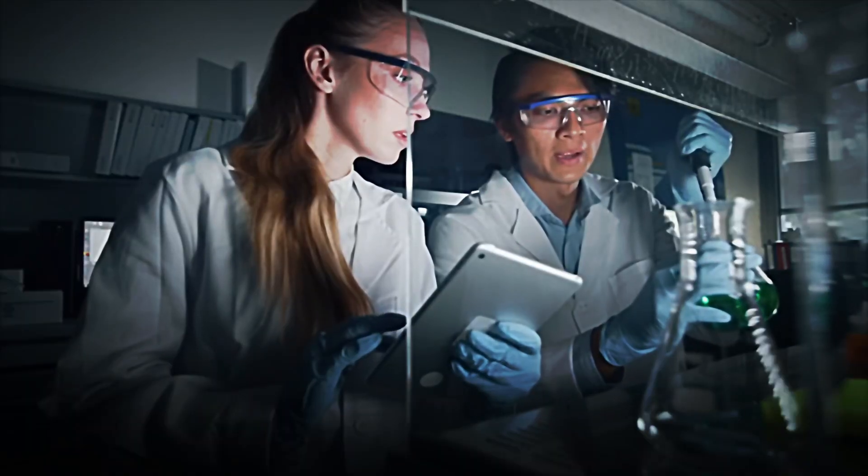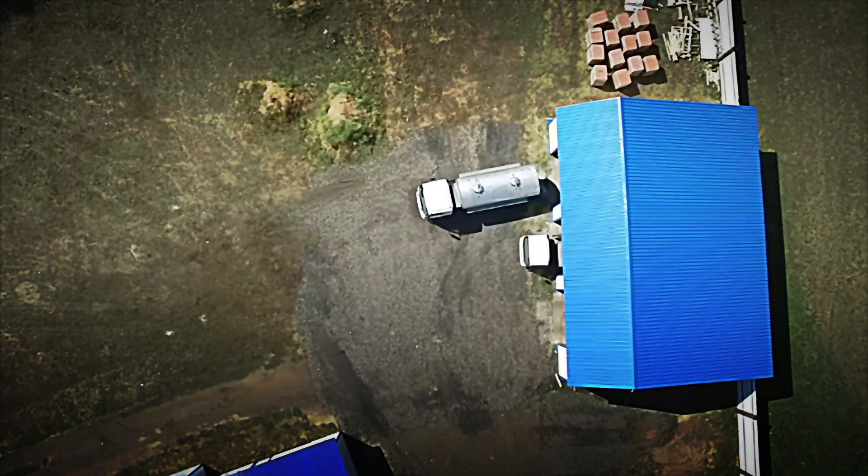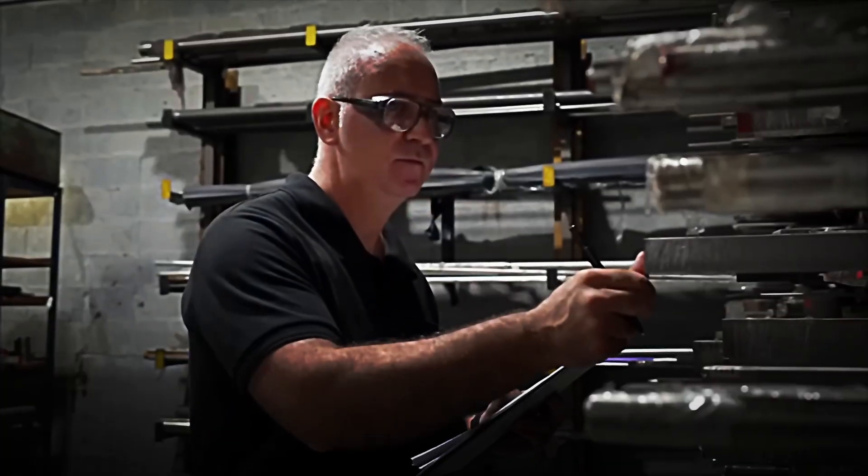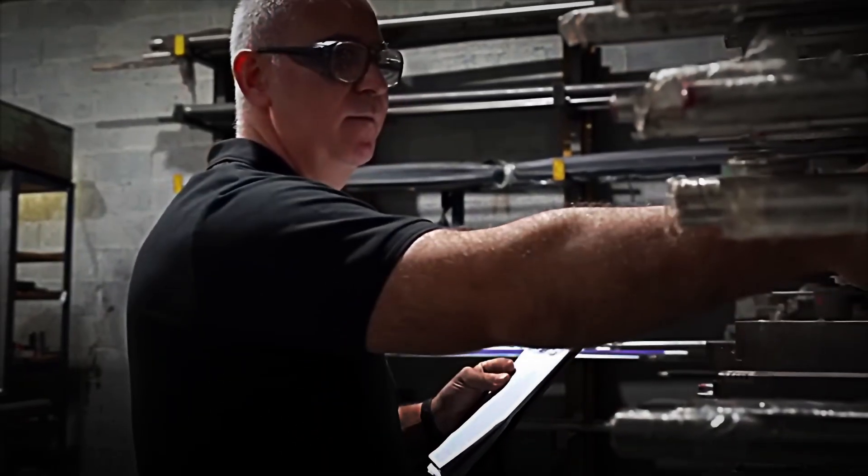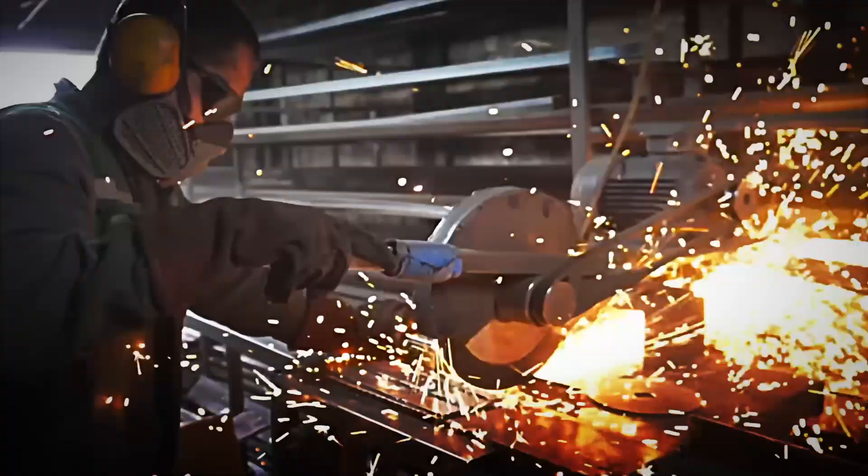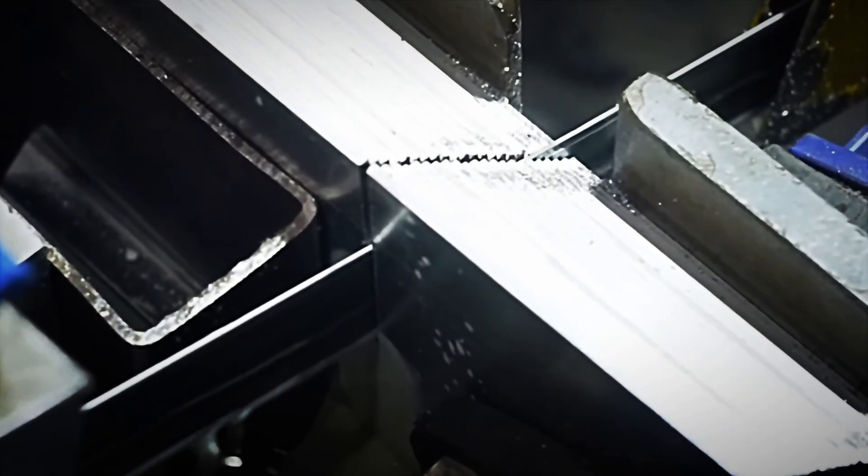In addition to chemical analysis, specialized inspectors visually check the bars to ensure there are no cracks, rolling defects, or inclusions that could weaken the tool during forging. Once approved, the wire rod moves to the cutting area.